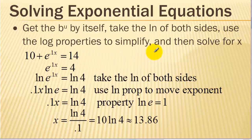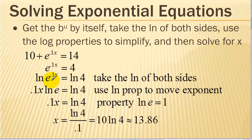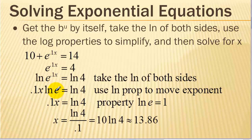I have one all worked out here and then we'll work one together. We want to get e to the u — meaning the base to the u — by itself, so I have to subtract 10 from both sides. Now I take the logarithm of both sides. In this case it will definitely be easier to take the natural log. If the base is e, use the natural log. If the base is 10, use the common log. Now on this side we can use our log properties to bring the exponent in front, and we can also use the property that the ln of e is 1. So we end up on the left side with 0.1x.